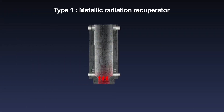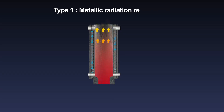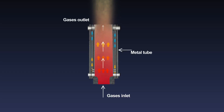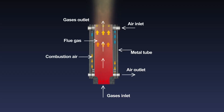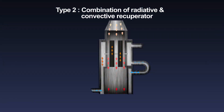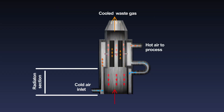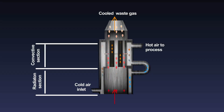A variety of recuperator designs are available for use in rolling mills. The simplest configuration used for pulverized coal fired furnaces is the metallic radiation recuperator, which consists of two concentric lengths of metal tubing. The inner tube carries the flue gas and the outer tube carries the combustion air to be preheated. This type has low efficiency, so to improve heat transfer effectiveness, a combination of radiative and convective designs is used.